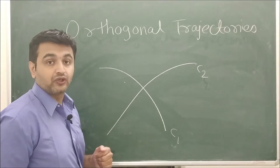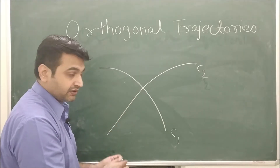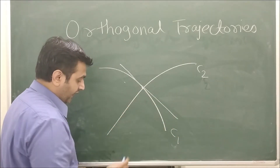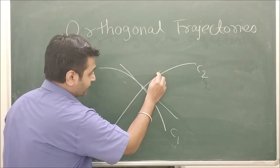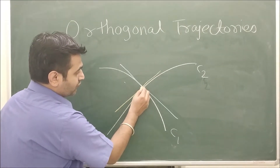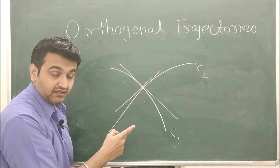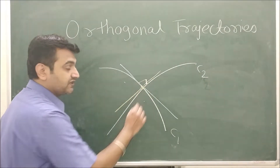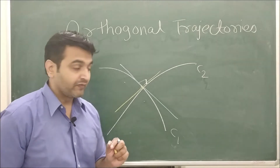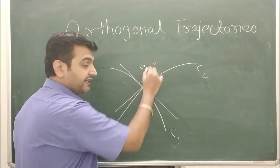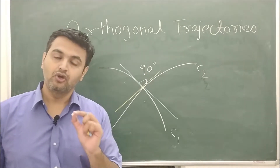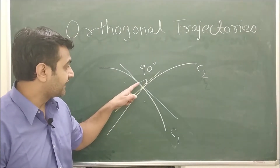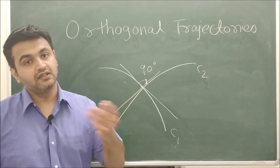Here there are no lines, so how do you conclude orthogonality? At the common point of intersection, you draw the tangent line with respect to the first curve and the tangent line with respect to the second curve. You then look at the angle between those two tangent lines. If those two tangent lines make an angle of 90 degrees, then we say that the curves are orthogonal to each other.